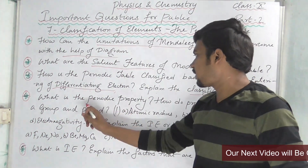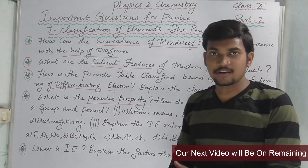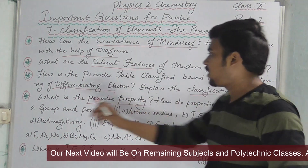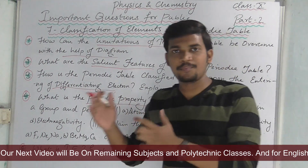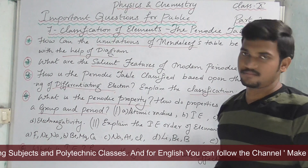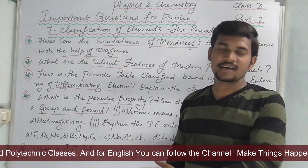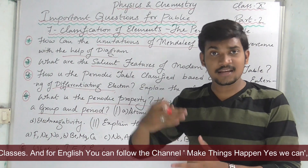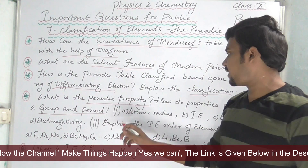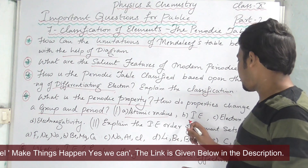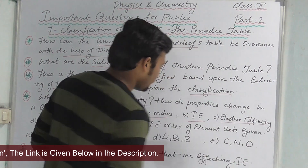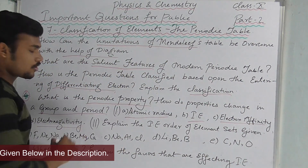What is the periodic property? If you have the periodic property, you have to write it. How do properties change in a group and period? From the periodic table, going left to right properties increase, and top to bottom they decrease. You have to write about atomic radius, ionization energy, and electron affinity.